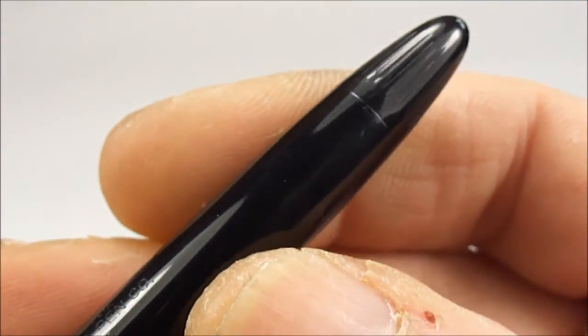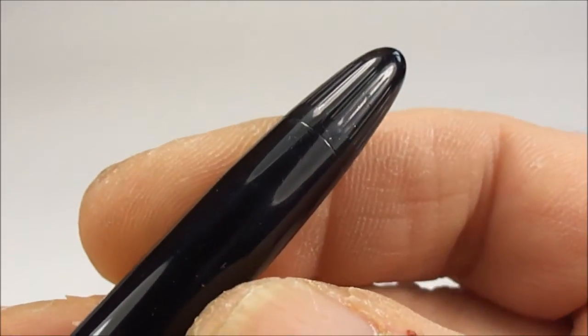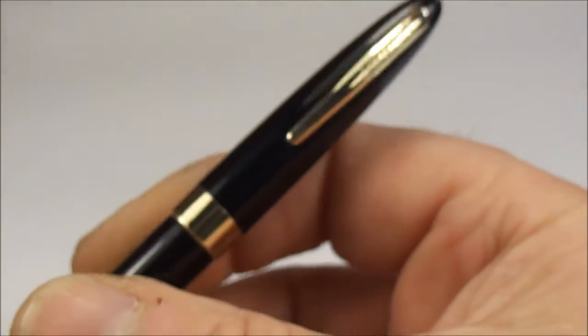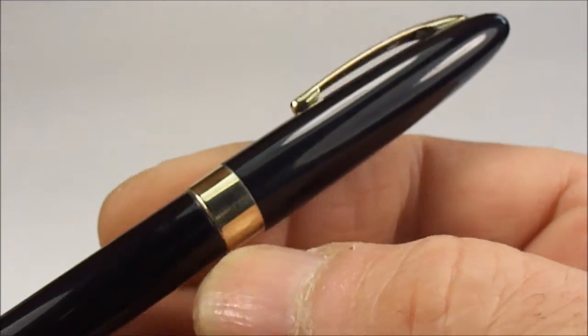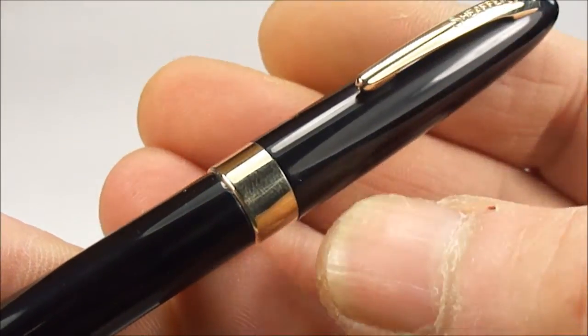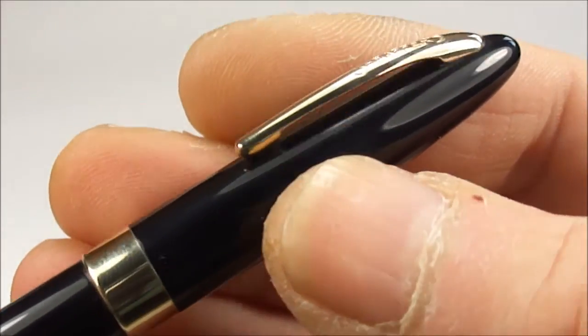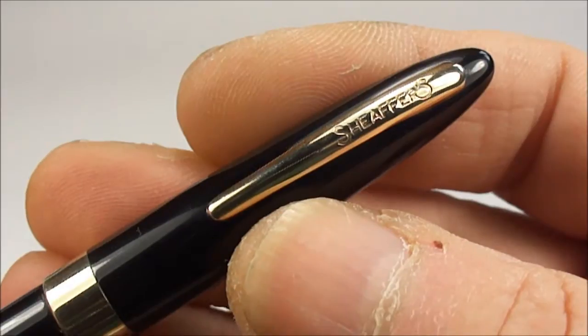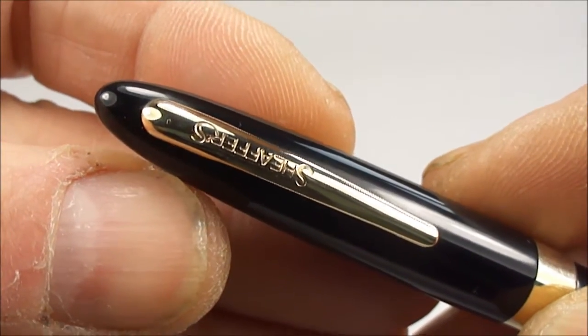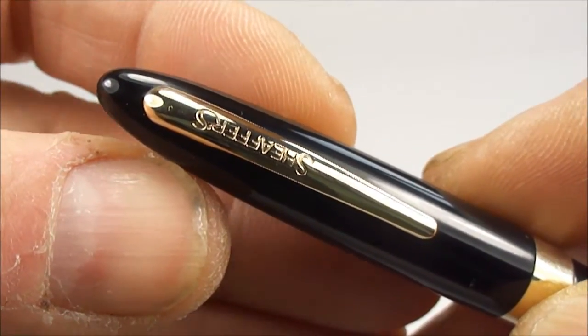To the end of the barrel there you can see the filler knob which we'll show you working in a moment. If we take you to the top of the pen, the cap there, you can see it's got this large gold filled cap band and the very recognizable Schaefer clip to the top there with the word Schaefer's on the clip itself.